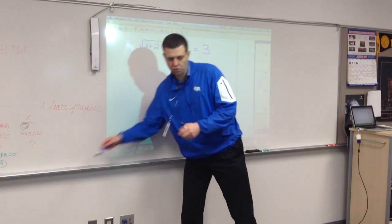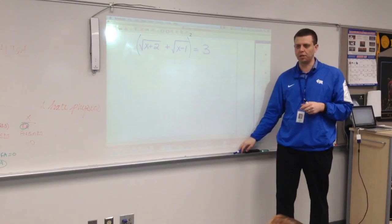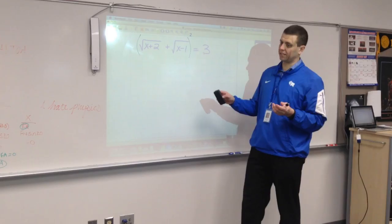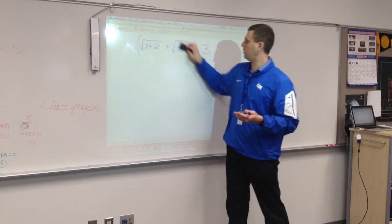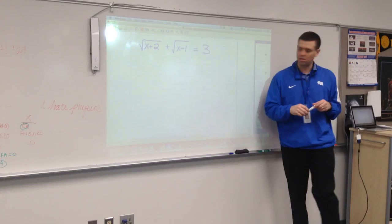You can't square terms individually. You have to square the entire side. So if you square the entire side, you're going to have to take that quantity times itself. Which is okay, but it gets a little bit ugly when you have two square roots on the same side of the equal sign. I would probably move one of the radicals to the other side and then square both sides. It's still not real nice, but it's better than doing that.